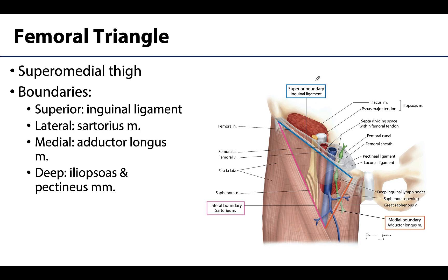The femoral triangle is located in the superior medial thigh region, closely associated with the groin region and the abdominal region — basically at the superior portion of the lower limb. It appears as a triangular depression inferior to the inguinal ligament. The inguinal ligament is the external oblique aponeurosis that extends from the ASIS (anterior superior iliac spine) to the pubic tubercle, and it serves as the superior boundary of the femoral triangle.